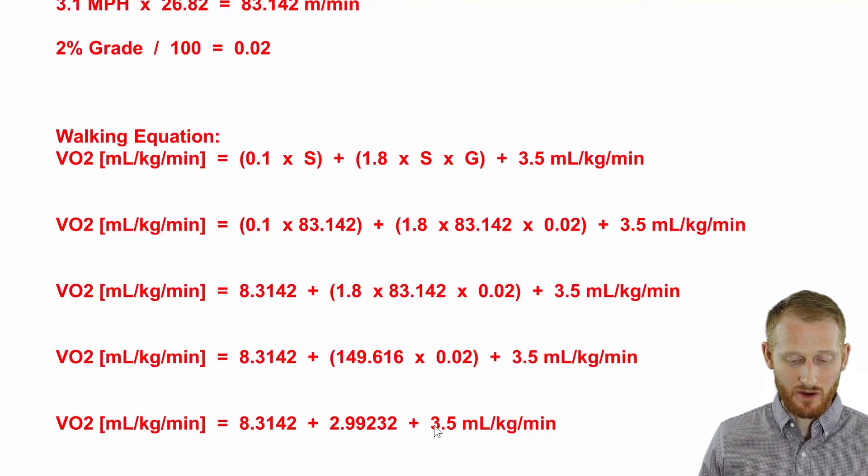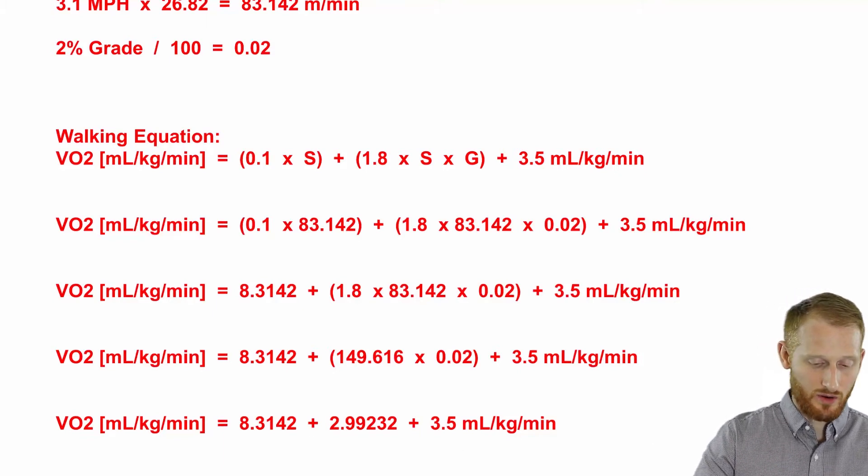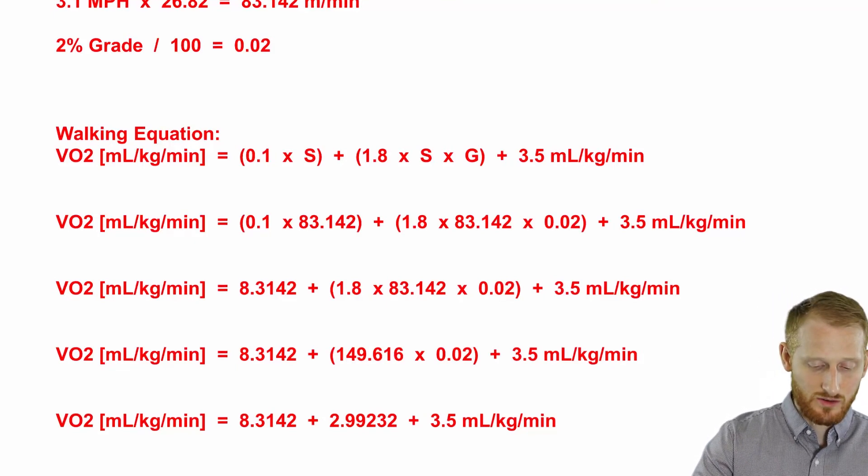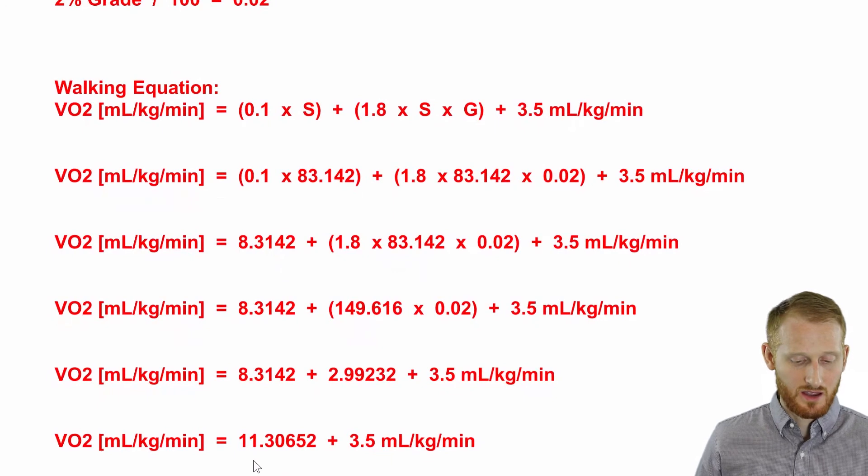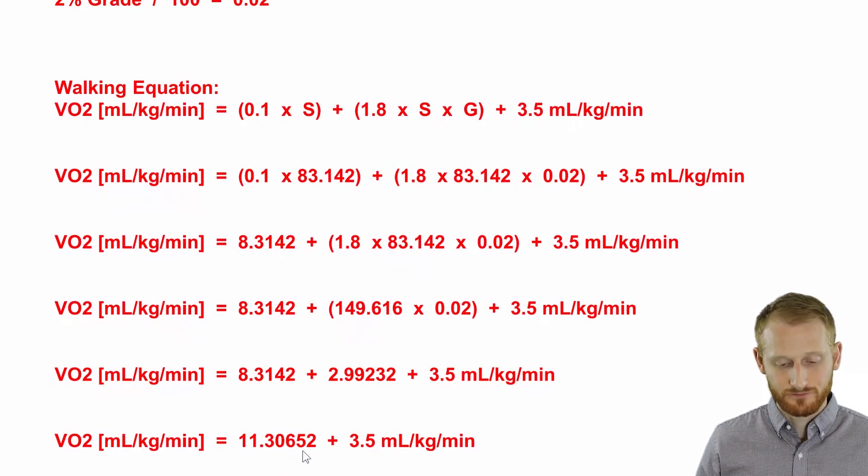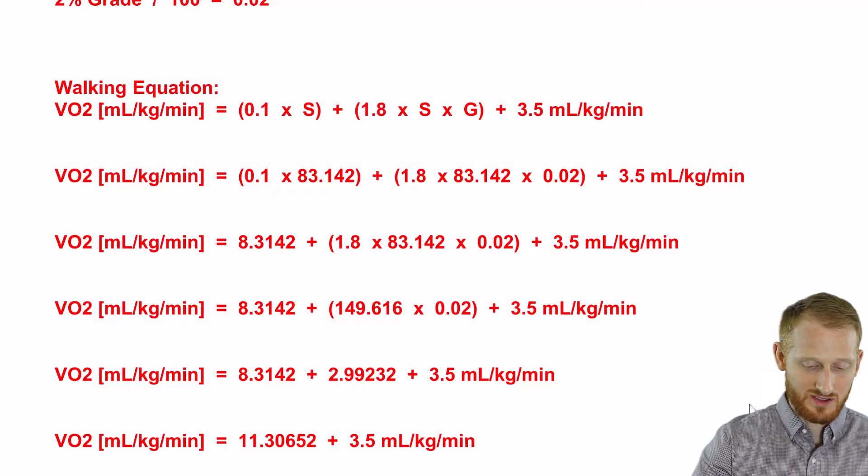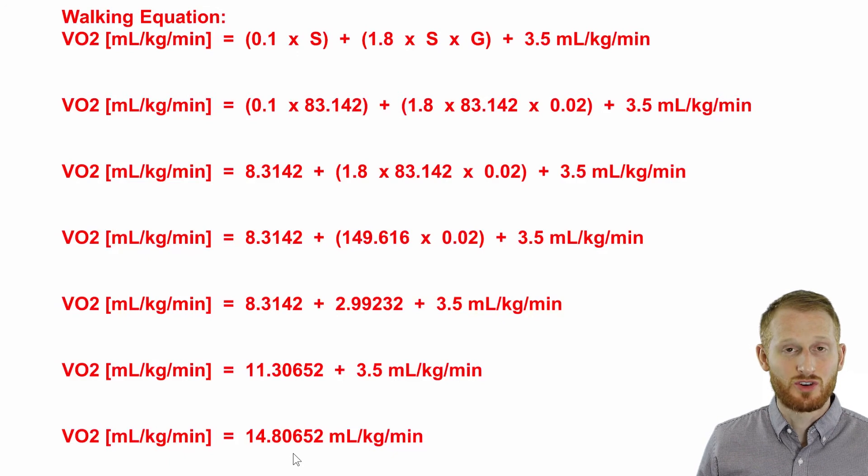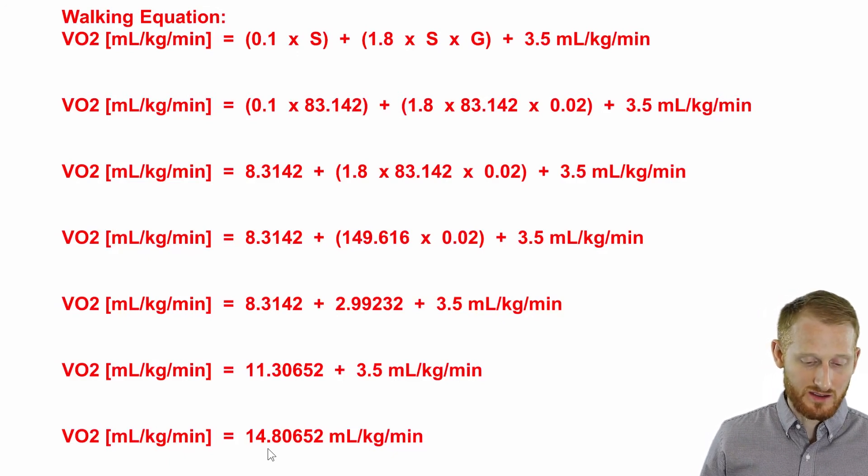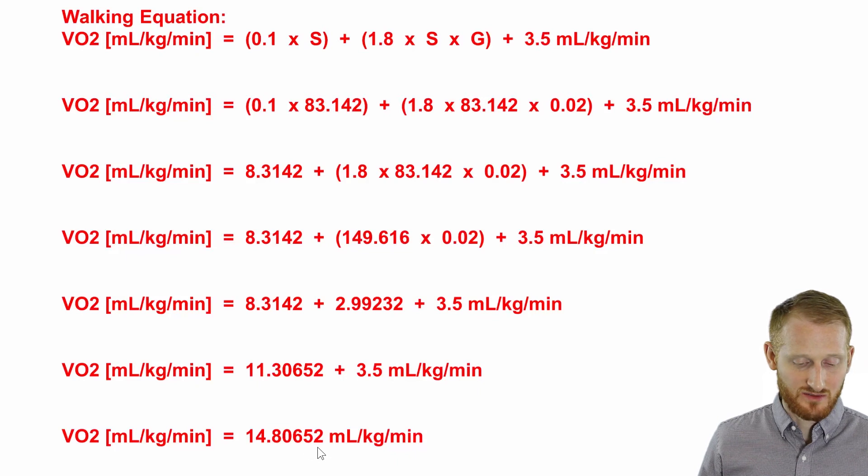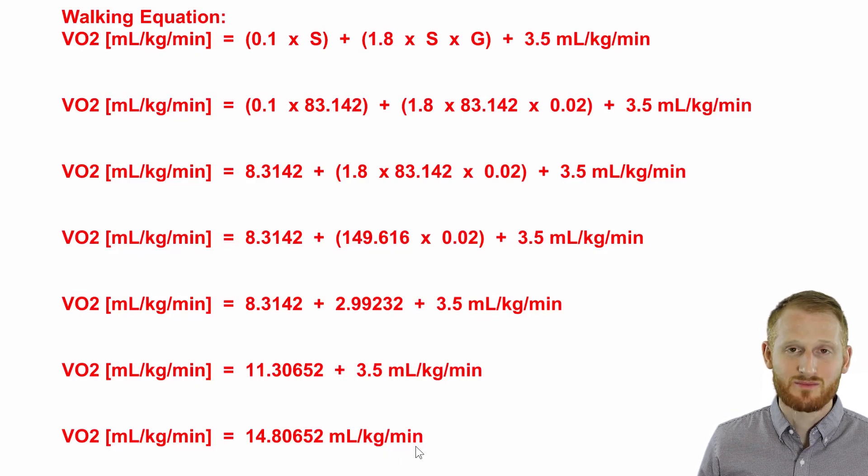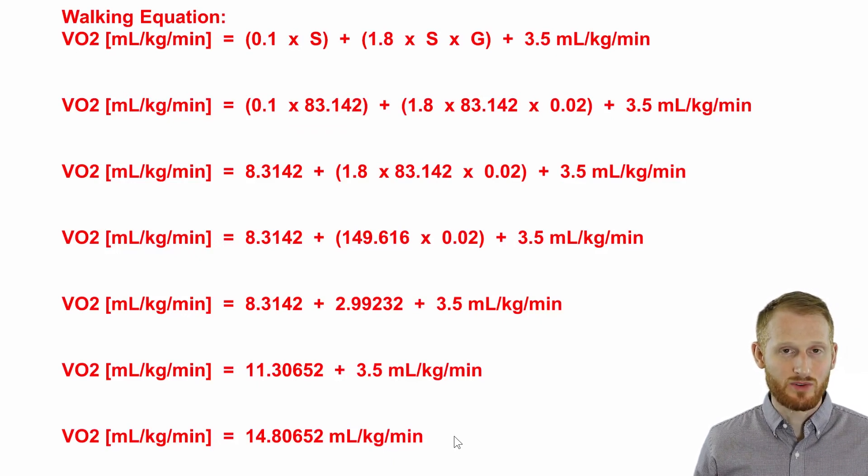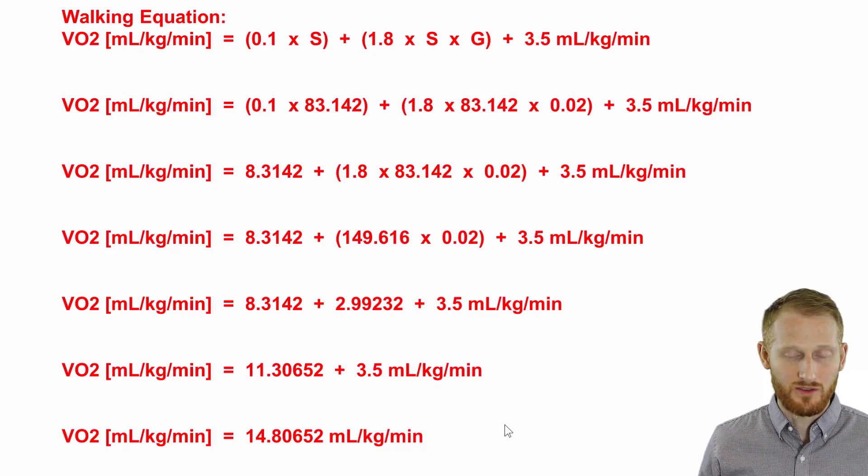Now we just have a bunch of addition here, so we can add these up. So 8.3142 plus 2.99232 gives us 11.30652. Now we add that to the 3.5, which is the resting component, and we end up with an oxygen consumption during this bout of walking that is 14.80652 milliliters of oxygen per kilogram body mass per minute. We would just round this most likely to 15 mL/kg/min to have more useful values.